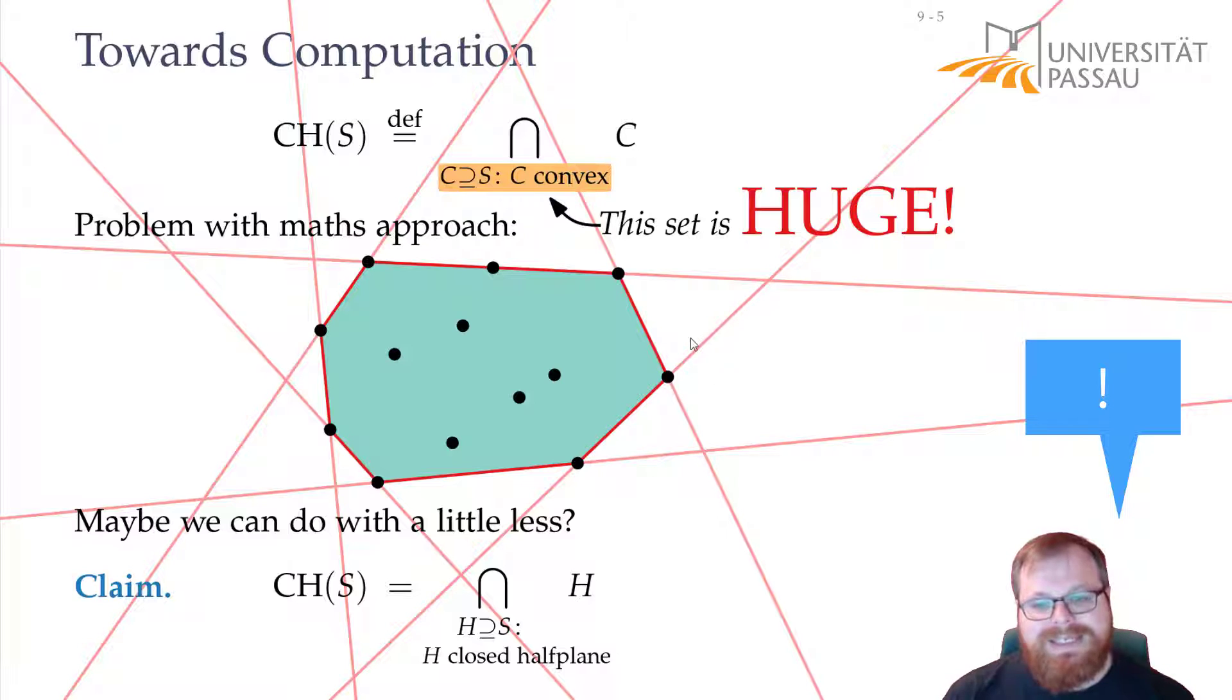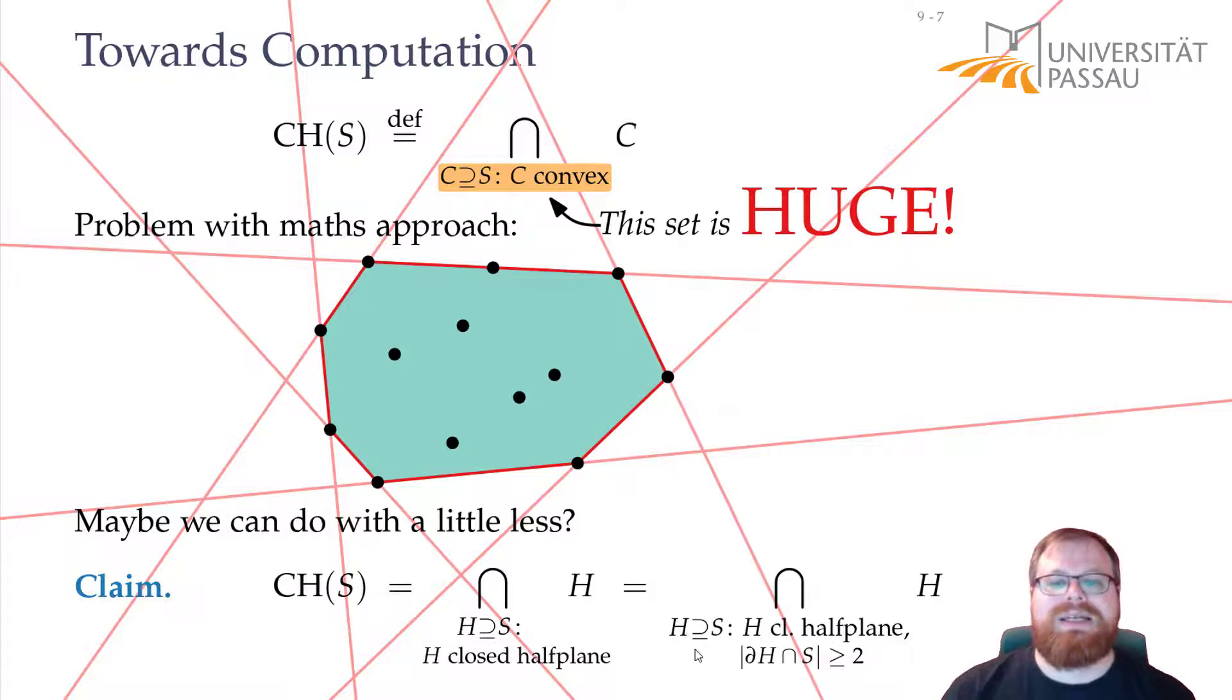If we look at all these half planes, each of them goes through a corner point of our input point set. And even better, each of these boundaries of the half planes goes through at least two points of the input set. So, we don't have to look at all the closed half planes, we only have to look at those that contain at least two input points on the boundary. And now, this is something that we can compute. This is not an infinite amount of half planes anymore, but an amount that is polynomially bounded by the number of input points.